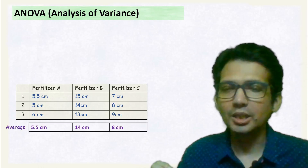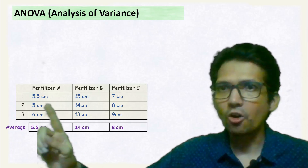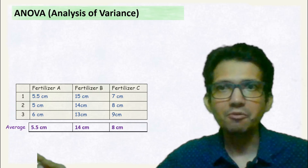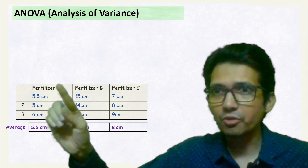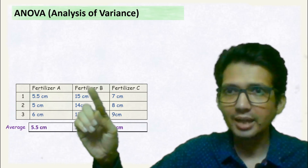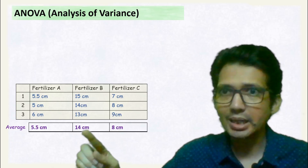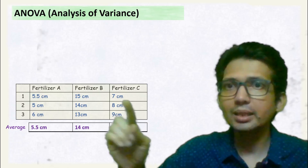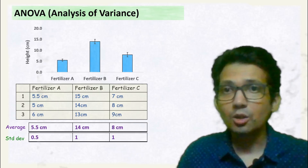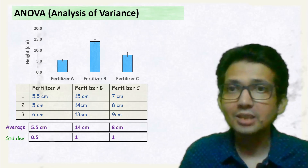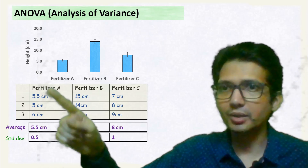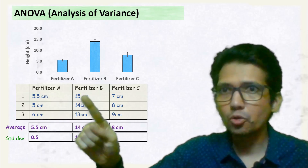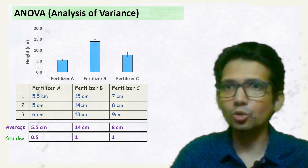A simple calculation you can do is, for each of the treatments, calculate the average value. So the average value for Treatment A is this, and the average value for Treatment C is this. You can also calculate the standard deviation of this data. So the standard deviation of Treatment A is this, Treatment B is this, and so on.